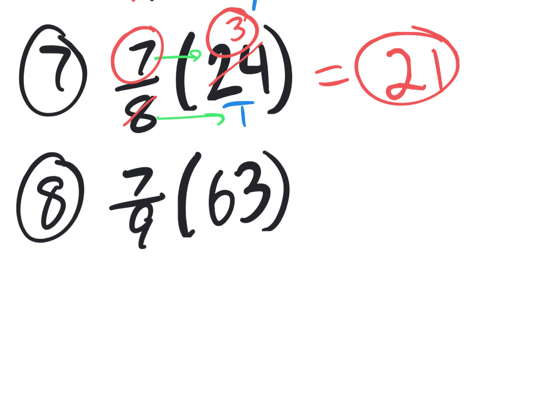Hopefully after doing this so many times, you can look at a problem and do it in your head. The answer to seven ninths times 63 is 49. Putting 63 over one and recognizing 63 on top divided by nine on the bottom: 63 divided by nine is seven, so that's really a seven times seven over one, which is 49.